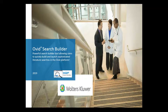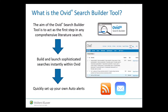Welcome to this tutorial where we introduce and demonstrate the Ovid Search Builder tool. The aim of the Ovid Search Builder tool is to act as the first step in any comprehensive literature search. It will also allow users to build and launch sophisticated searches instantly within the Ovid platform. Ovid users will then be able to quickly create their own auto alerts for those searches.